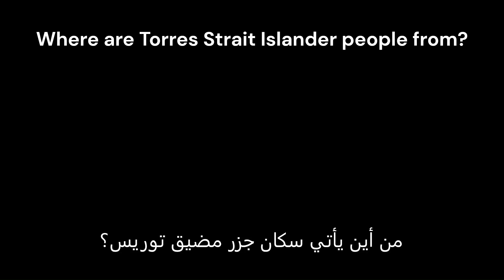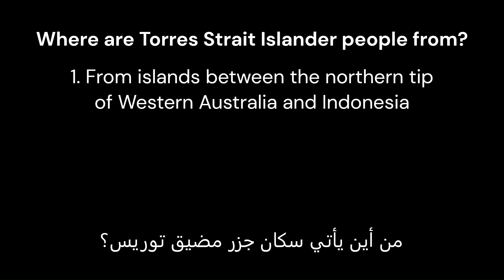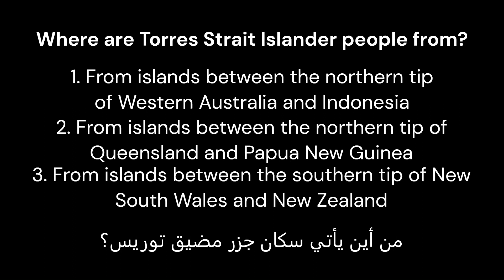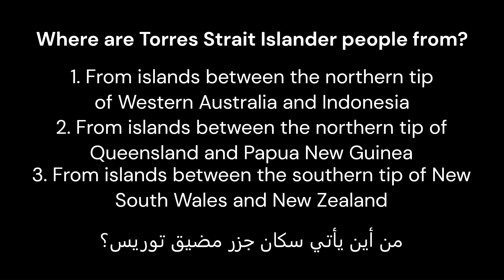Question 9: Where are Torres Strait Islander people from? Option 1: From islands between the northern tip of Western Australia and Indonesia. Option 2: From islands between the northern tip of Queensland and Papua New Guinea. Option 3: From islands between the southern tip of New South Wales and New Zealand. Correct answer is 2: From islands between the northern tip of Queensland and Papua New Guinea.